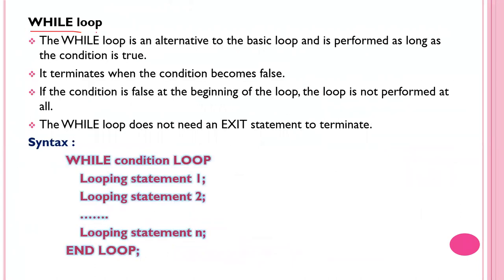The next type of loop is the while loop, which is an alternative to the basic loop. The while loop performs the task as long as the condition is true; it terminates when the condition becomes false. If the condition is false at the beginning of the loop, the loop is not performed at all. Unlike the basic loop, the while loop does not need an exit statement to terminate.